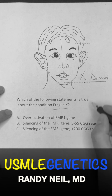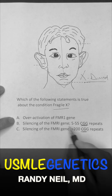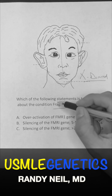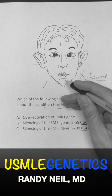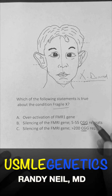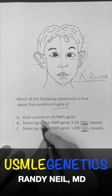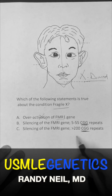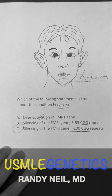We know that it's a trinucleotide repeat issue. When the FMR1 gene is epigenetically inactivated, that allows all these CGG repeats. So it's not overactivation of the FMR1 gene — it's the underactivation. And it's got to get to at least greater than 200. Answer choice C.